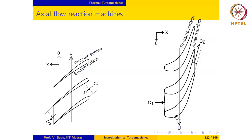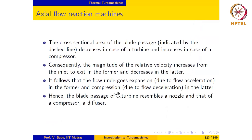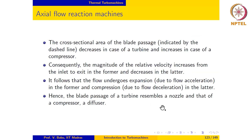To summarize: the cross-sectional area of the blade passage decreases in a turbine and increases in a compressor. The magnitude of relative velocity increases in a turbine and decreases in a compressor, meaning the flow undergoes expansion due to acceleration in the turbine and compression due to deceleration or diffusion in the compressor. Therefore, the blade passage of a turbine resembles a nozzle and that of a compressor resembles a diffuser.